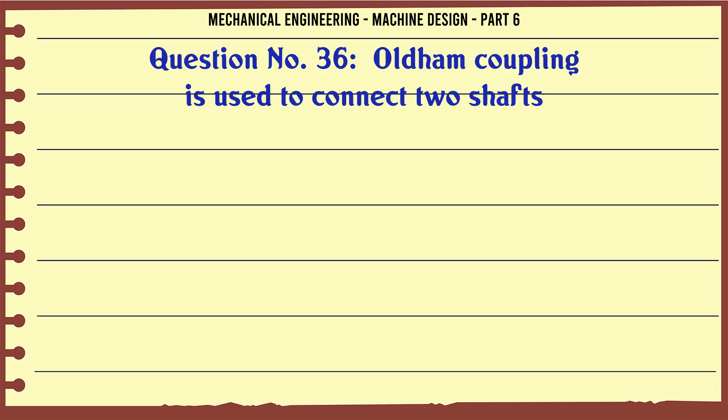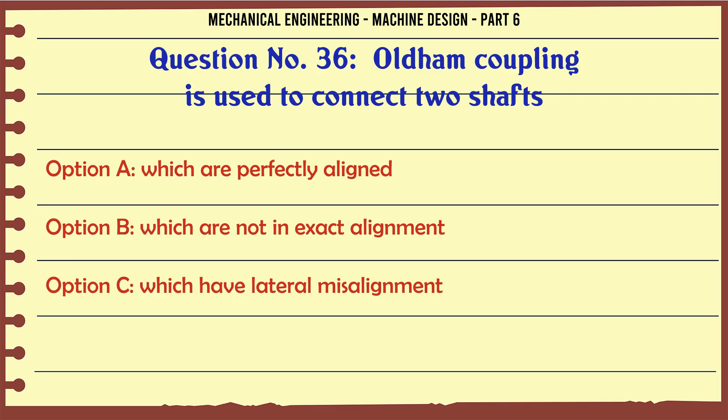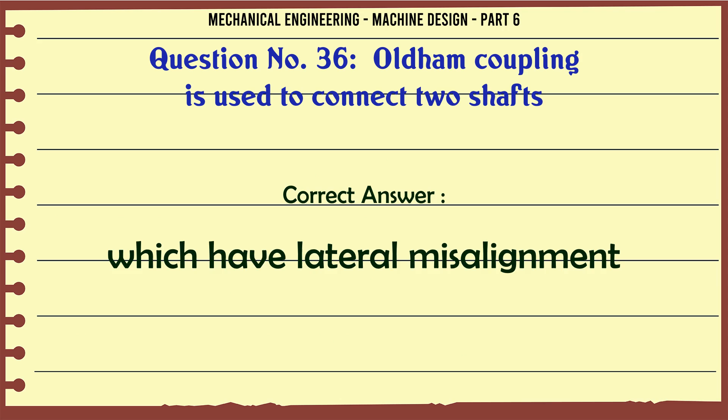Oldham coupling is used to connect two shafts: A) which are perfectly aligned, B) which are not in exact alignment, C) which have lateral misalignment, D) whose axes intersect at a small angle. The correct answer is which have lateral misalignment.